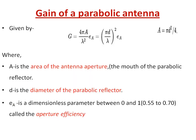The gain of the parabolic antenna is given by G = (4πA / λ²) × eₐ, where A is the area of the antenna aperture (the opening or mouth of the parabolic reflector), λ is the wavelength, and eₐ is the aperture efficiency — a dimensionless parameter ranging from 0 to 1, typically 0.55 to 0.70. Since for a parabolic structure A = πD²/4, the gain becomes G = (πD/λ)² × eₐ.